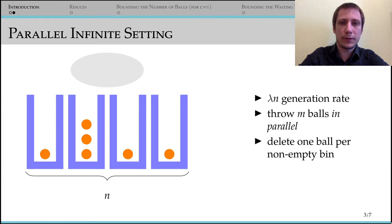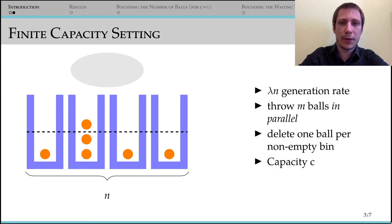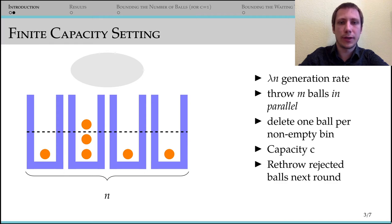We aim to fix this by introducing a very natural constraint to the bins. We assign all bins a finite capacity C. Each round, the bin accepts as many balls as possible and rejects the rest. All rejected balls are thrown again together with the newly generated balls.